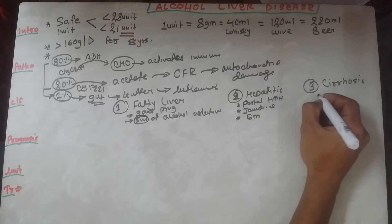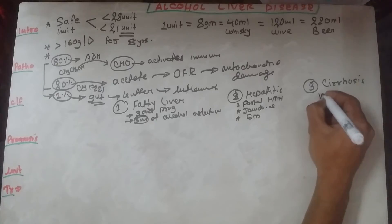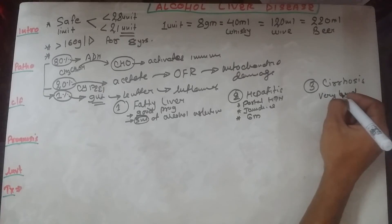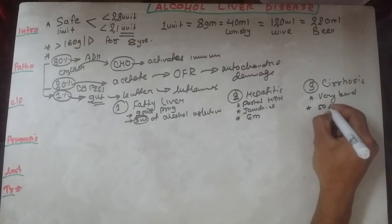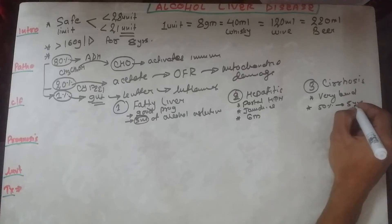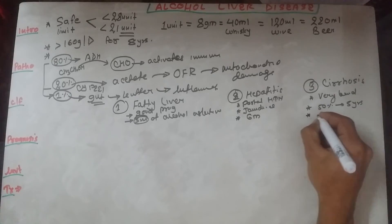Coming to the last and worst prognostic disease of alcoholic liver disease, it has very bad prognosis because only 50% of people survive for about five years. The survival rate is five years in 50% of people, and they often present with variceal bleeding, ascites, and hepatomegaly.